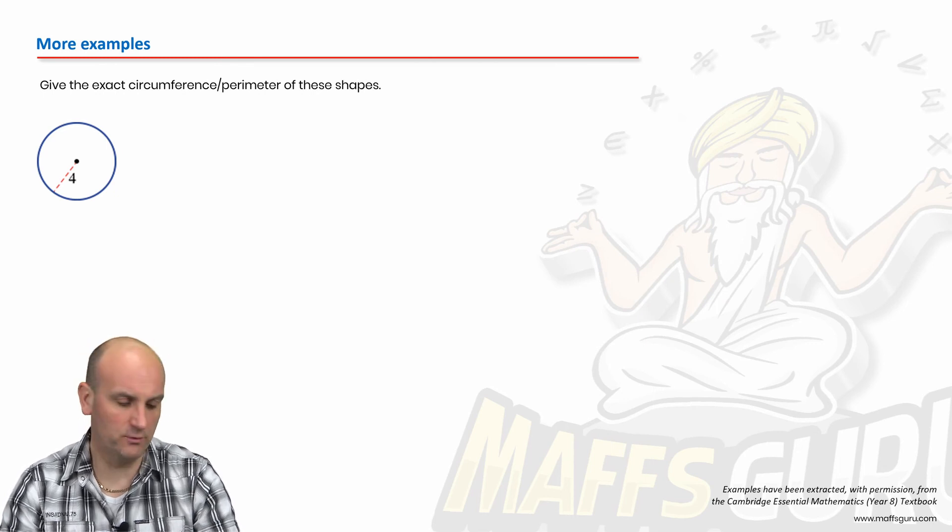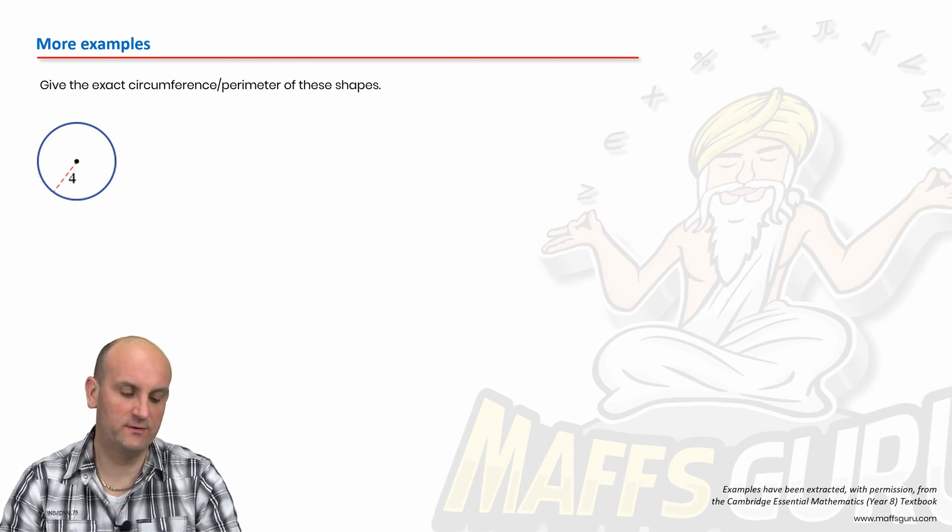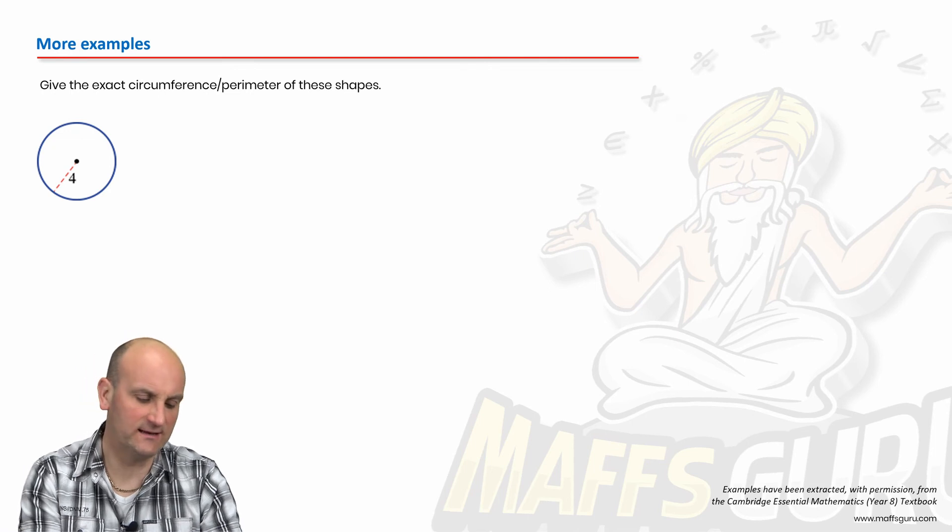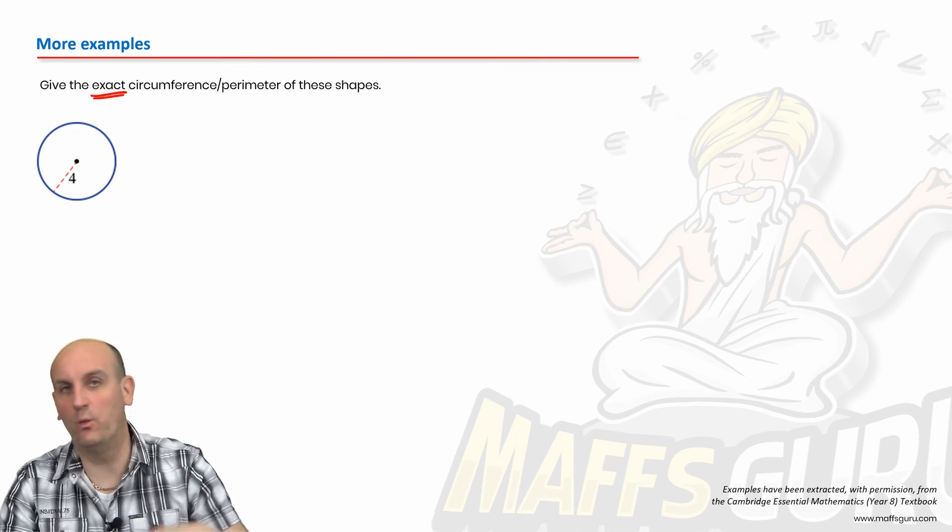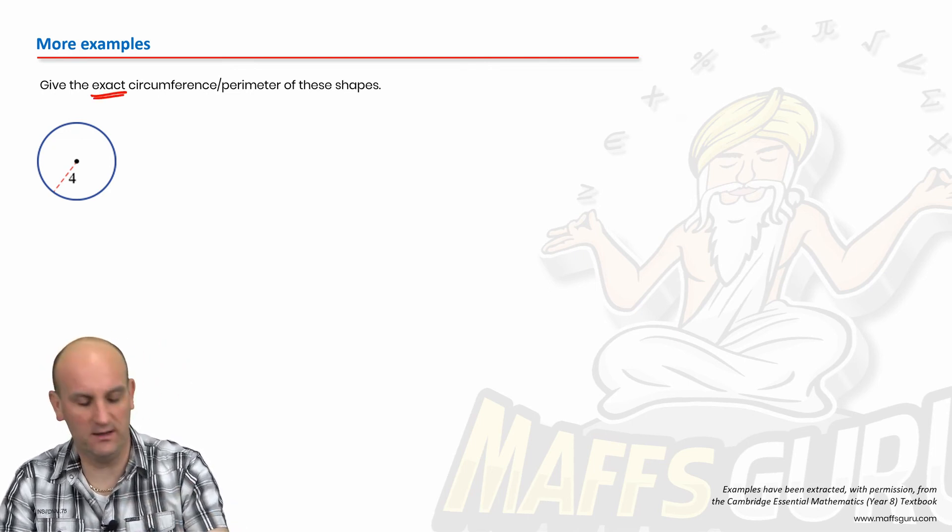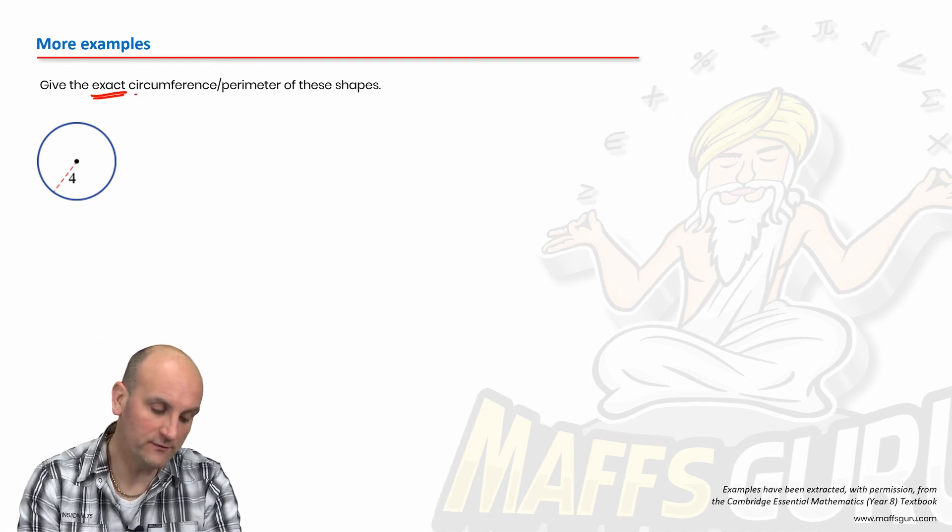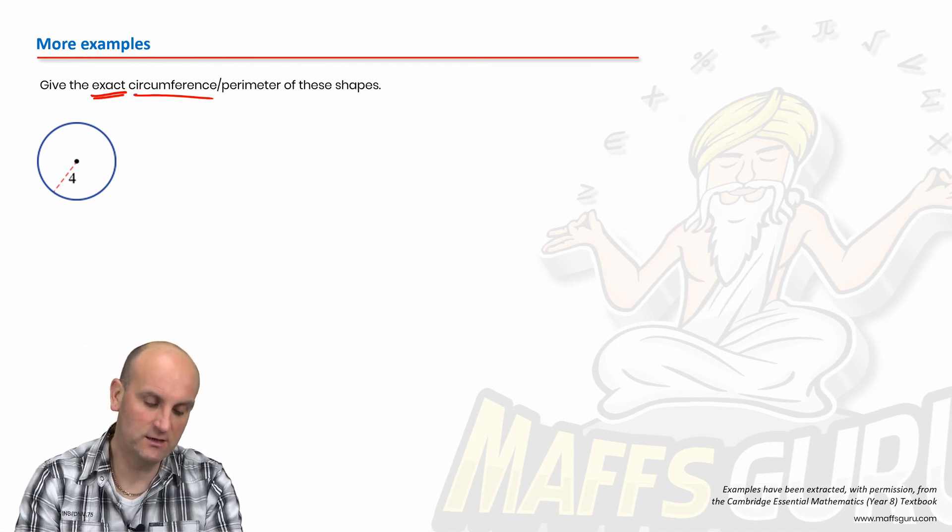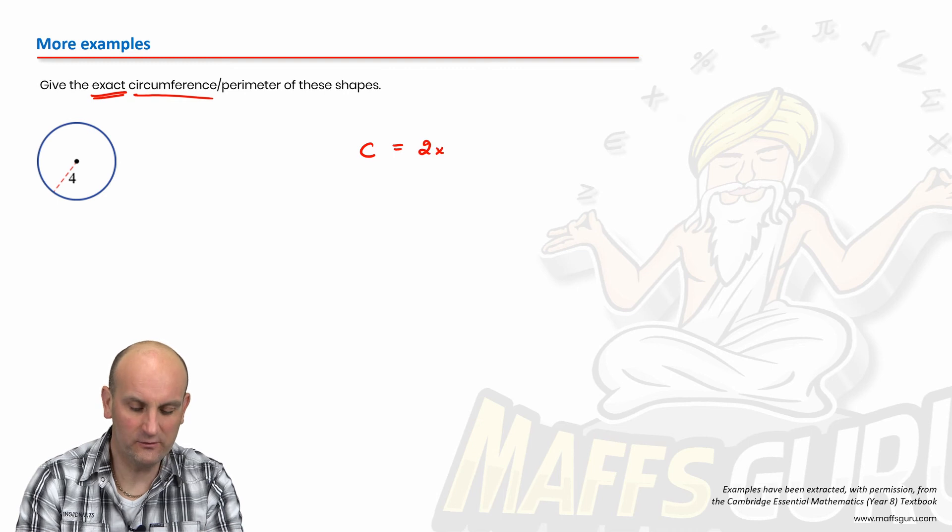All right. So here's another example. Give the exact circumference perimeter of these shapes. Now, what does it mean by exact? Well, whenever you see the words exact, it wants it in terms of an exact answer. So we are looking for the circumference of the shape. It's a circle. So we know the circumference is 2 times pi times radius. There's my formula.